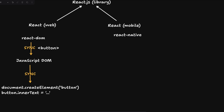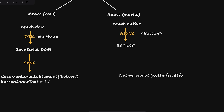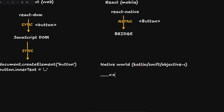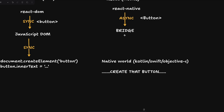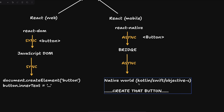In the older React Native architecture, if you want to do something with a native component like a button, you first inform the bridge. The bridge then communicates with the native world — Kotlin, Swift, or Objective-C — which executes the native API to create that component. This communication happens over the bridge because JavaScript is not the native language of mobile devices.